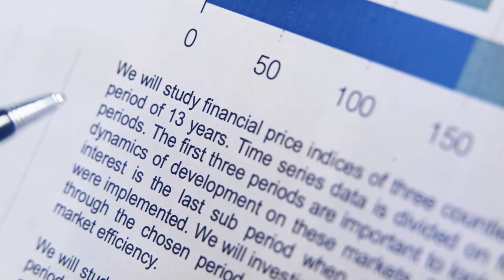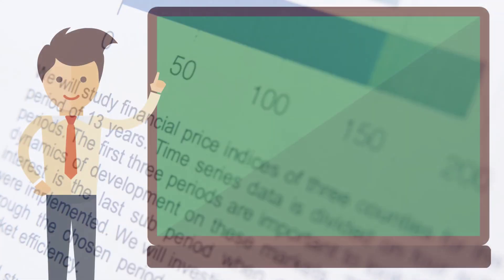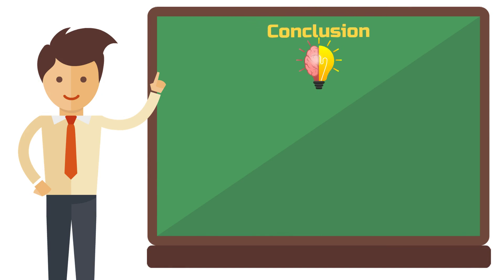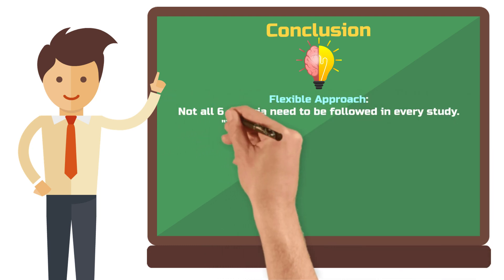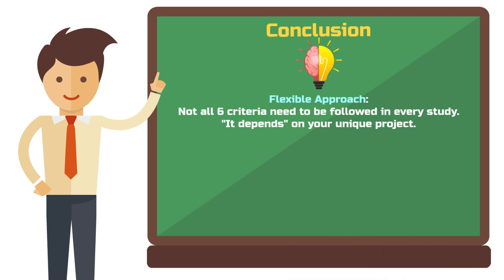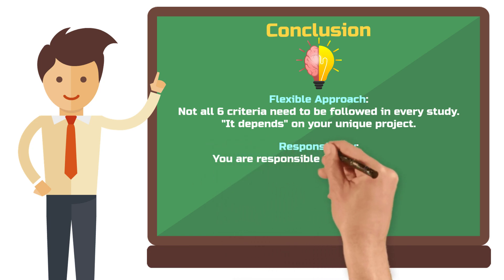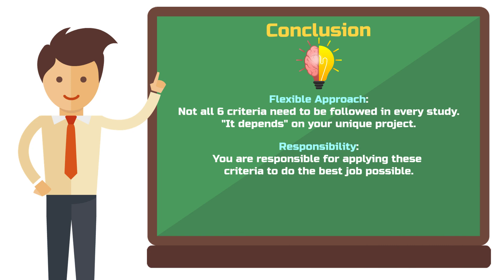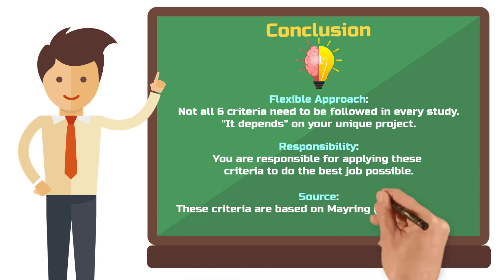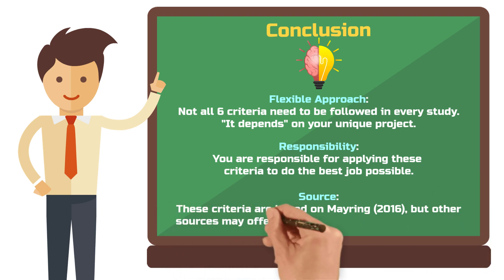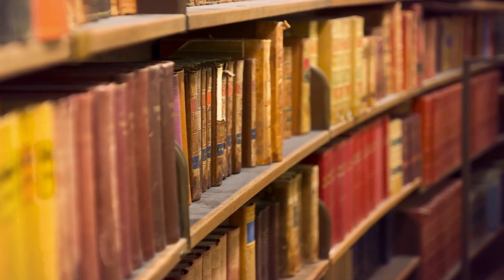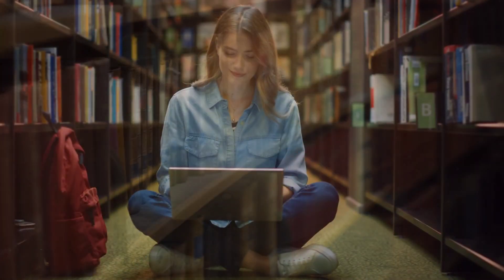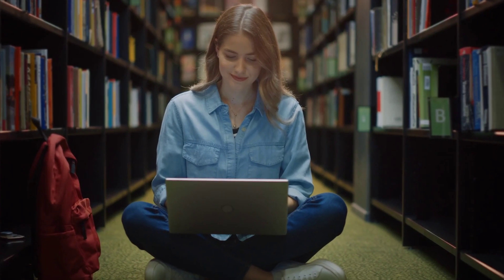Now let's summarize. These six criteria are important, but not all of them need to be followed for every qualitative study. Every research project is unique, which requires flexible criteria and you being responsible for doing the best job you can. These criteria come from one particular author called Mayring, who wrote about them extensively in his widely cited methods books. Other sources may suggest four or eight quality criteria, and although they might name them differently, the principles remain the same. If you take these six criteria seriously when developing your qualitative research design, you are on the right track.